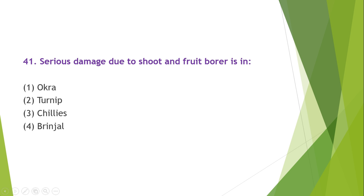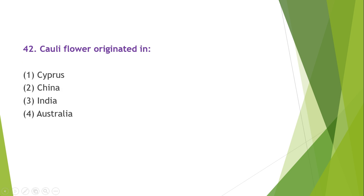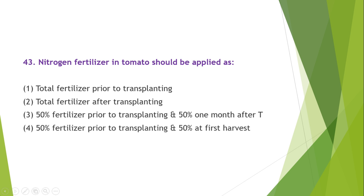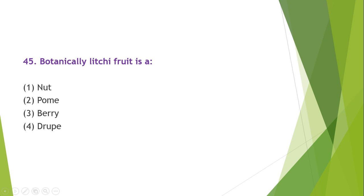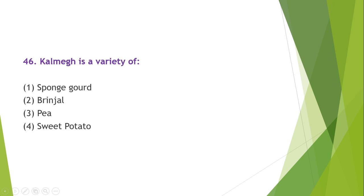The family of carrot has a seed rate of 5 kg per hectare. The average yield of turnip per hectare is 150 to 250 quintals. Serious damage due to shoot and fruit borer is in brinjal. Cauliflower originated in Cyprus. Nitrogen fertilizer in tomato should be applied as 50% prior to transplanting and 50% one month after transplanting. Pride of India is a variety of cabbage. Botanically, lychee fruit is a nut. Kalmak is a variety of sweet potato.